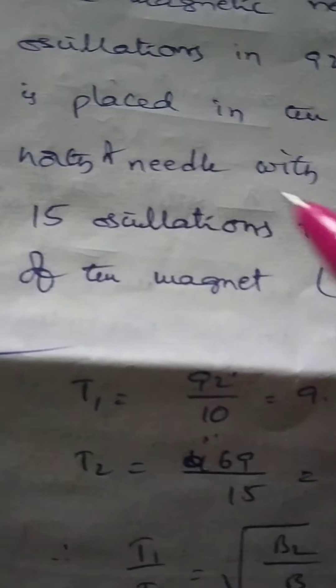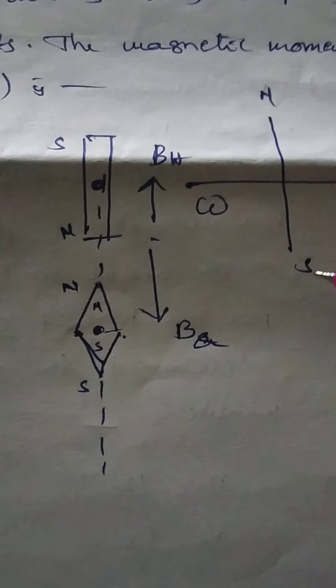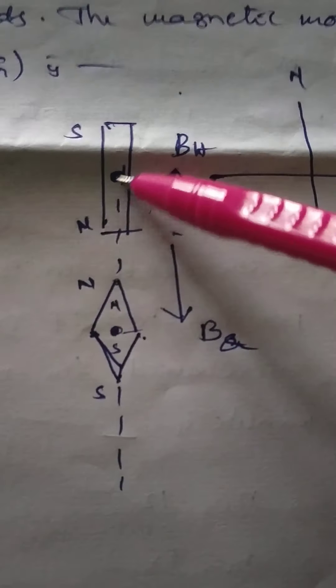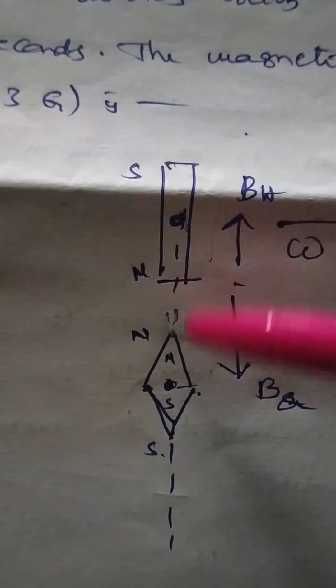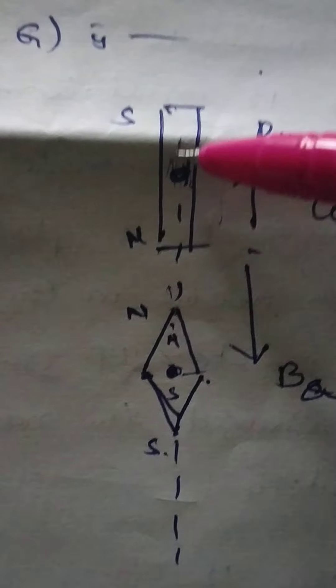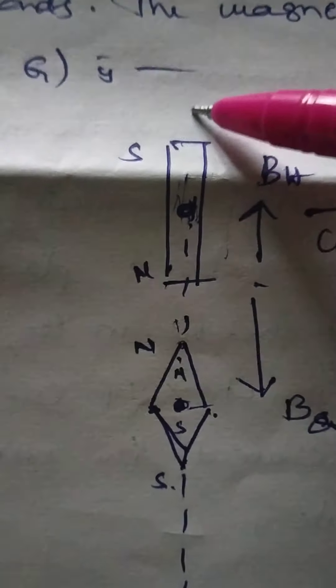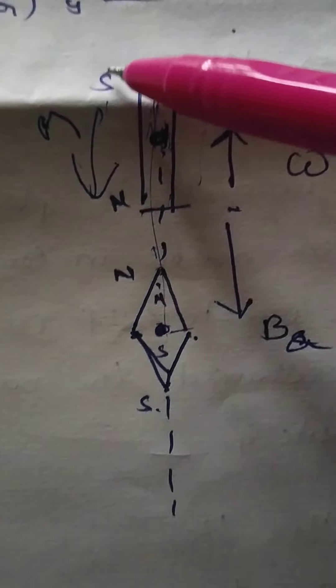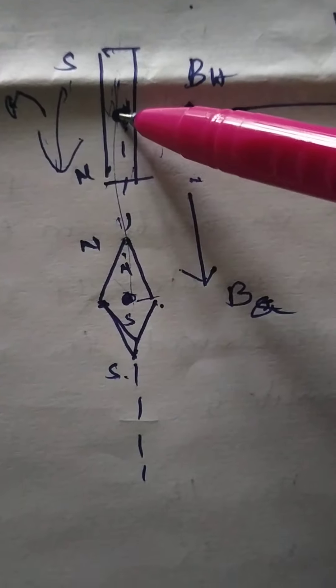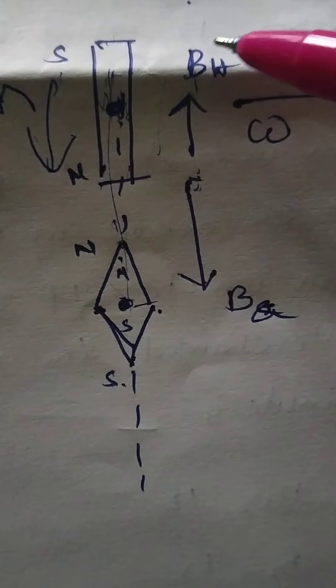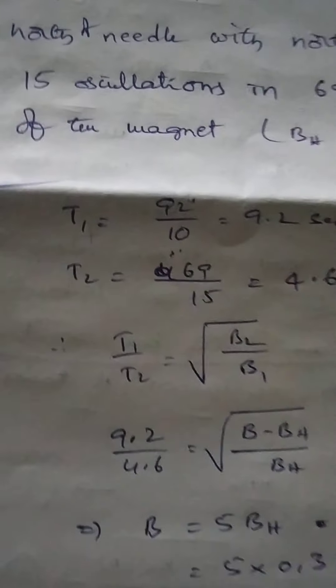The diagram shows the four geographic directions: north, south, east, and west. The horizontal component of Earth's magnetic field Bh is always directed from geographic south to north. The magnetic needle is a short bar magnet. The short bar magnet is kept at a certain distance such that the north pole of the magnet points toward the needle. The needle lies along the axial line of the magnet. The magnetic moment direction is from south to north, so the field created by the bar magnet opposes Bh at that point, making the resultant field Bh − Ba.